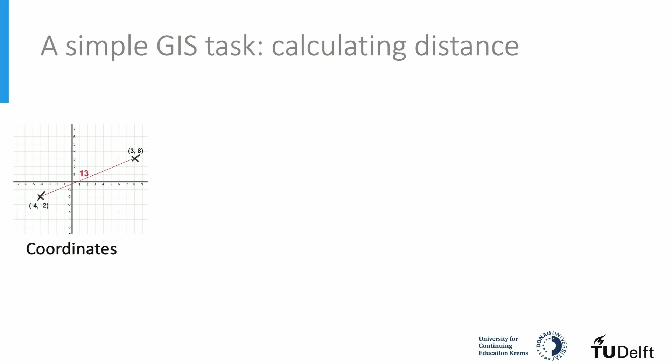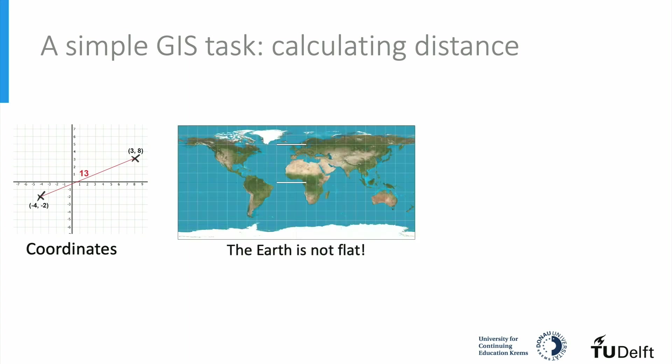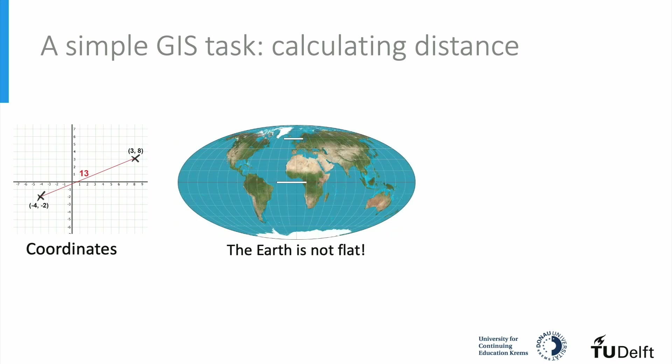So why is calculating the geographic distance between two locations a complex task? First, the Earth is not a two-dimensional plane like we often see on a map. It's a globe, a 3D object, and any 2D cartographic representation of the Earth will have distortions. For this reason, the distance between geographic coordinates cannot simply correspond with the geographic distance. For example, the same coordinate distance represents a much shorter geographic distance closer to the poles than closer to the equator. Complex geometric calculations must be used to account for the Earth as a 3D object.